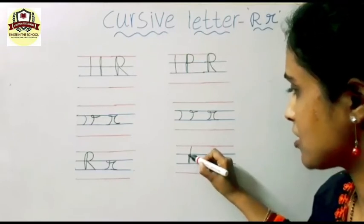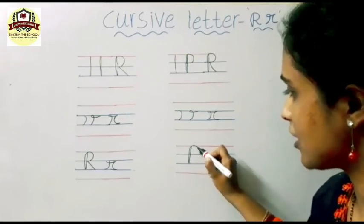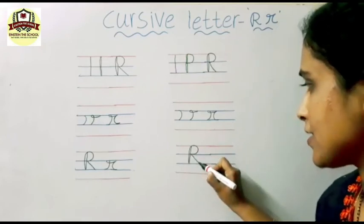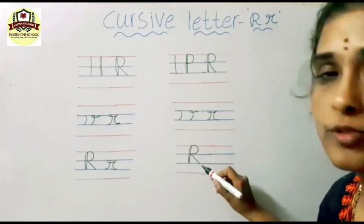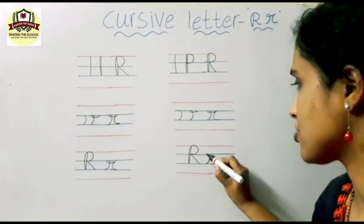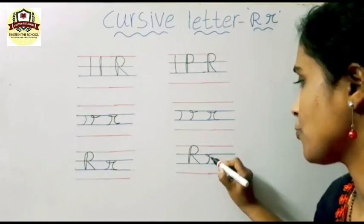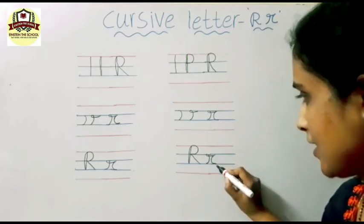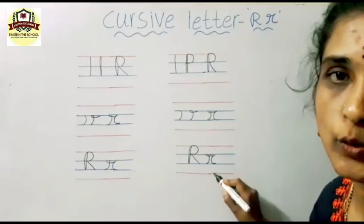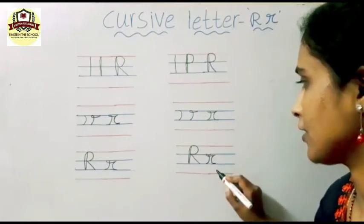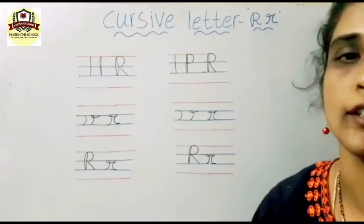For the capital cursive R, you should write first which letter? P. Now slanting line — capital cursive R. Now small r: first write reverse C, make a small turn over there, sleeping line, again write the letter small C. This is the small cursive R. Capital R. Small r. Practice this children. Thank you.